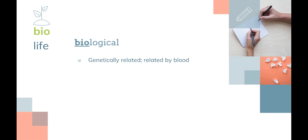Biological means that you are genetically related, or related by blood. Families are typically considered biological. So if your mom gave birth to you, you are biological — it means you're genetically related, related by blood. If someone is adopted, we would consider their parents not to be their biological parents, meaning they are not the parents that gave birth to them.